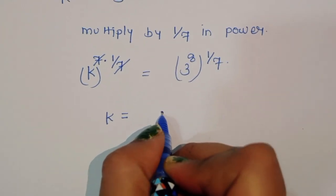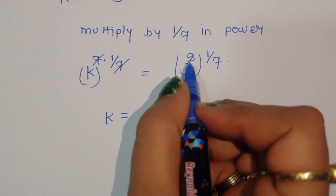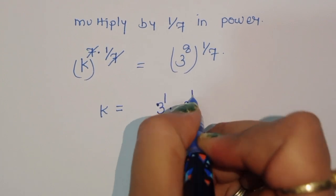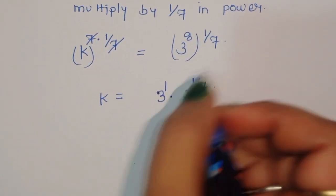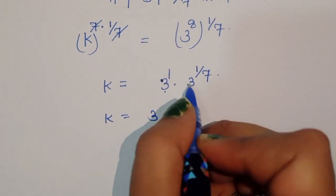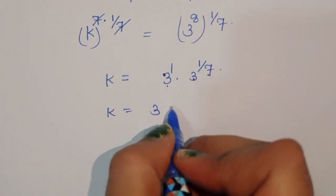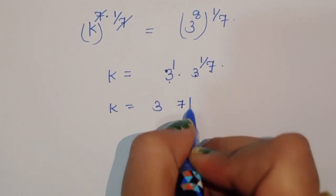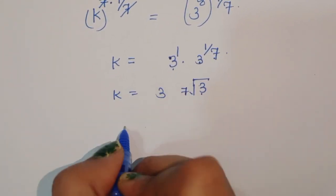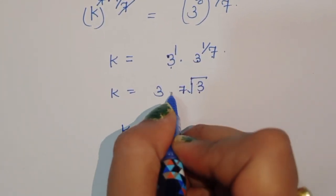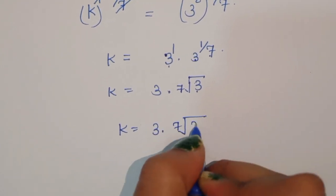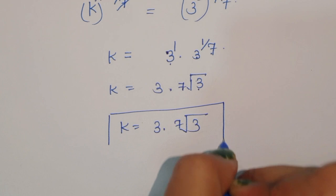We can write 3 to the power 8 over 7 as 3 to the power 1 times 3 to the power 1 over 7. So that is 3 times the 7th root of 3. Therefore, the value of k is equal to 3 times the 7th root of 3. This is the solution.